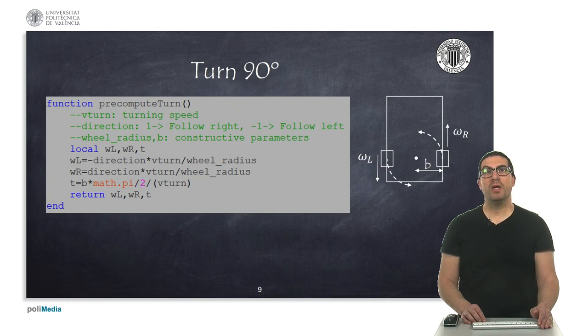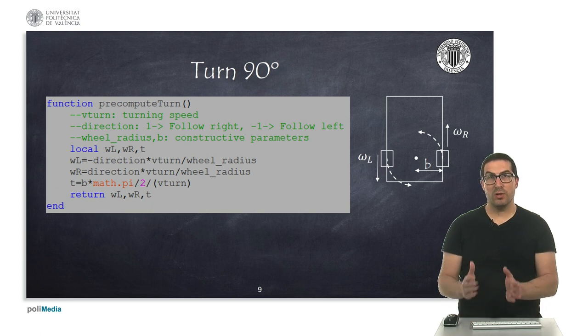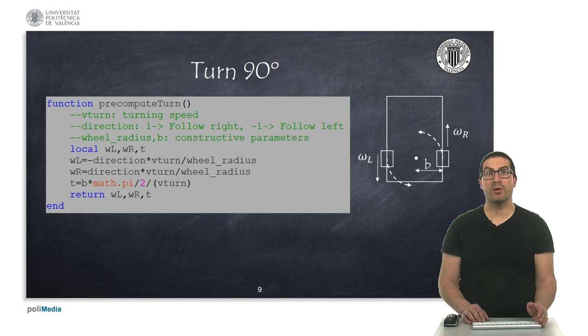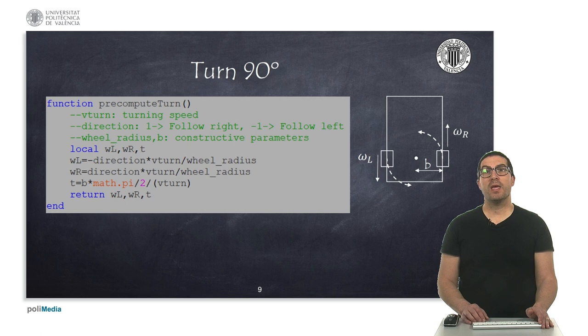When the robot has to make a turn, it will use pre-computed values returned by the pre-compute turn function. This function returns the angular speeds of the wheels in order to make this 90-degree turn and also the minimum time to perform this 90-degree turn. In this case, we need to provide the turning speed, the v-turn parameter, as well as the direction of rotation and some constructive parameters of the robot in order to compute these values.